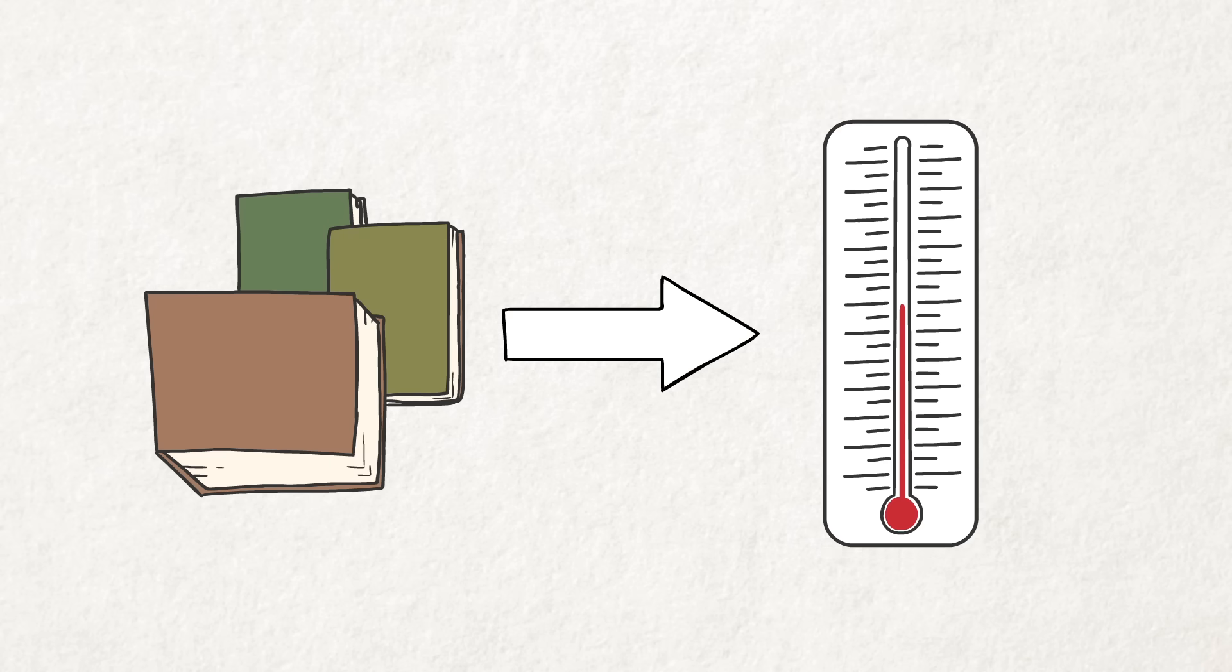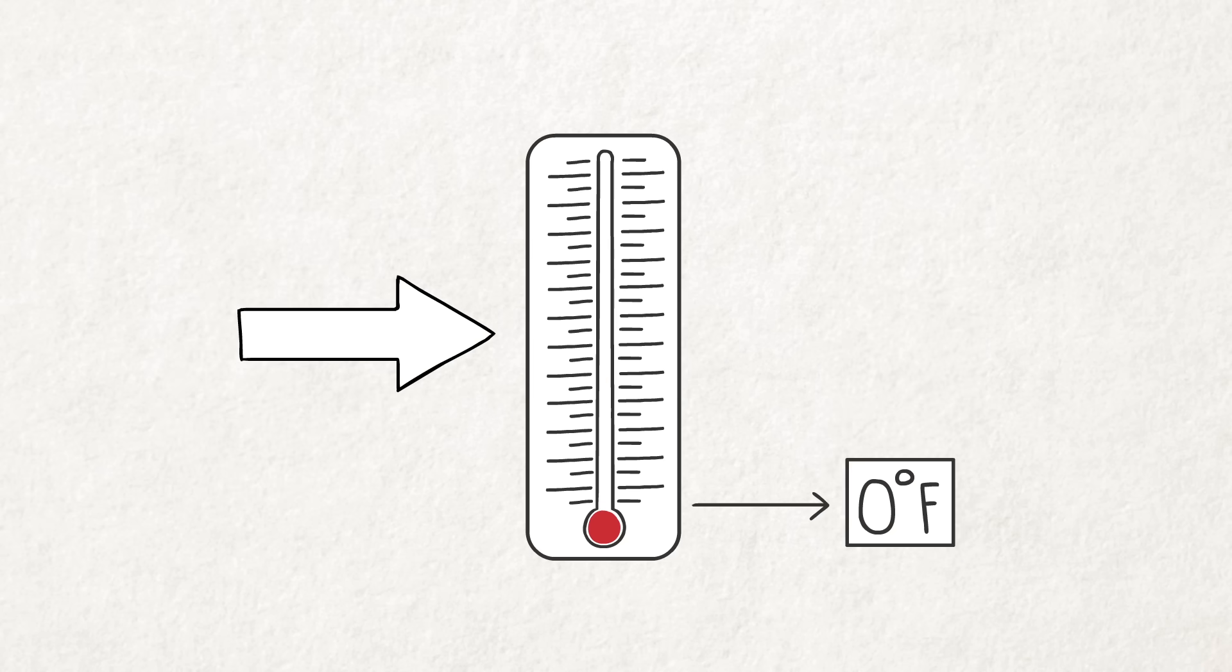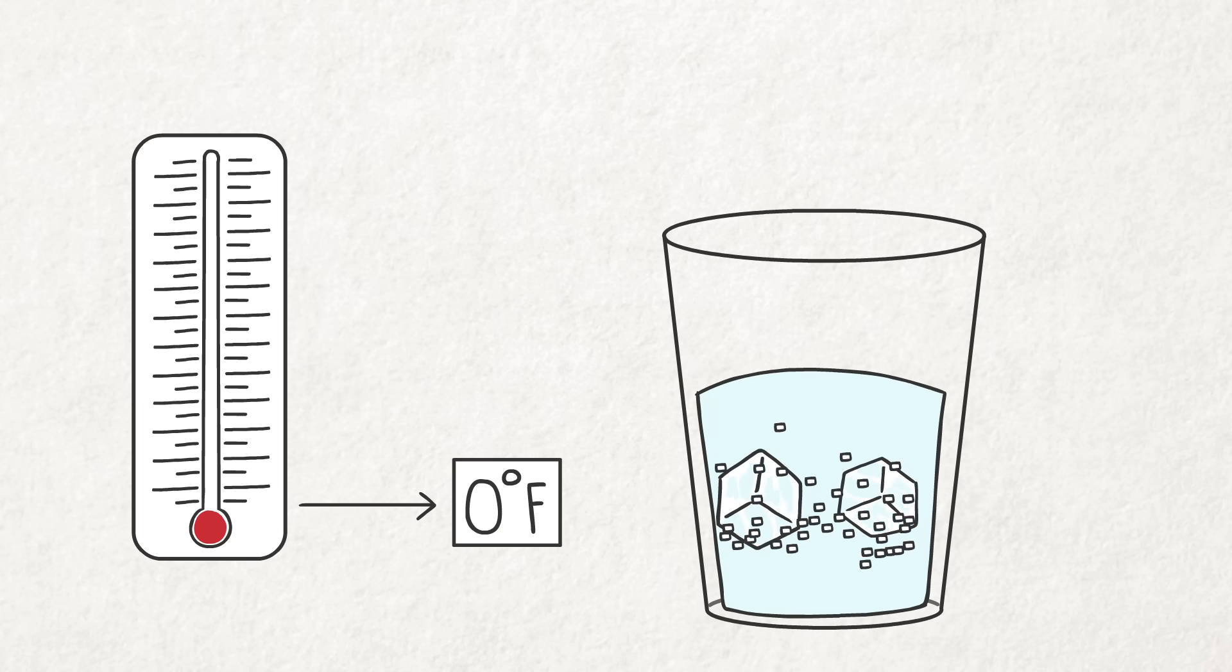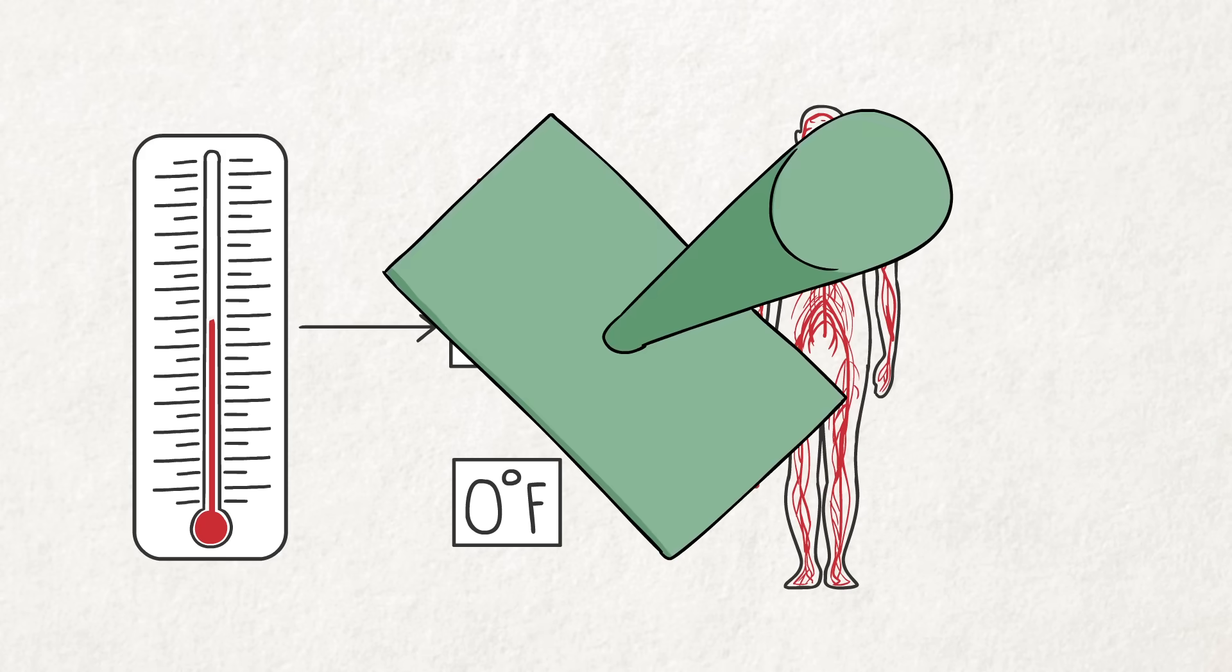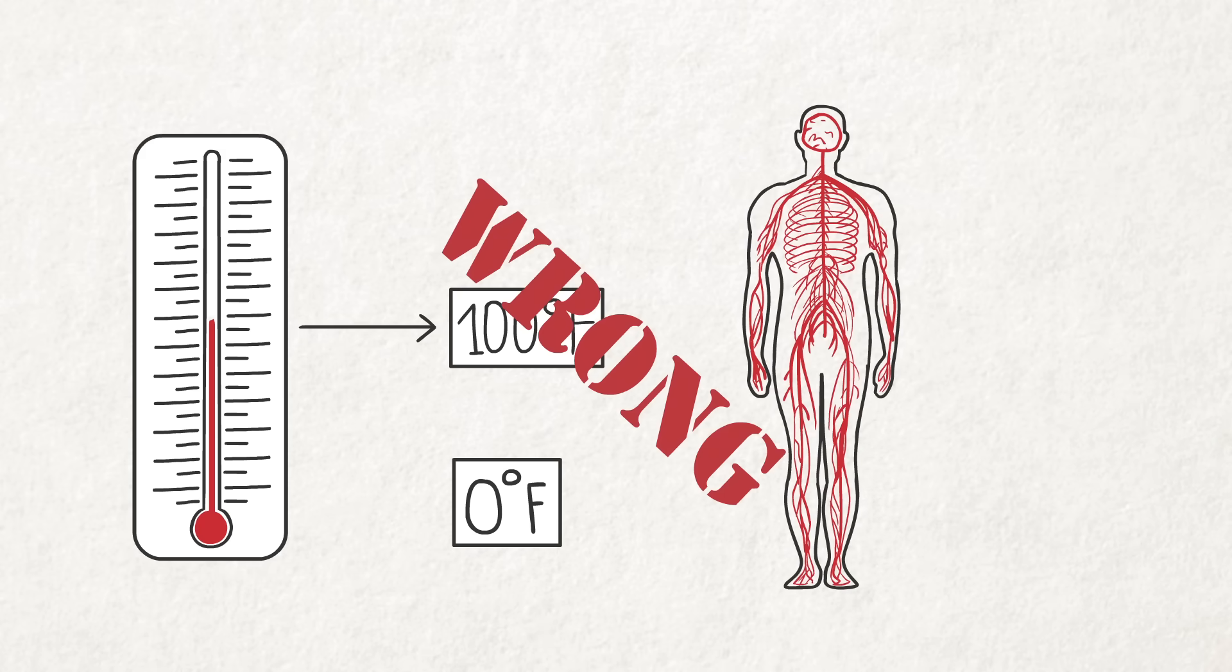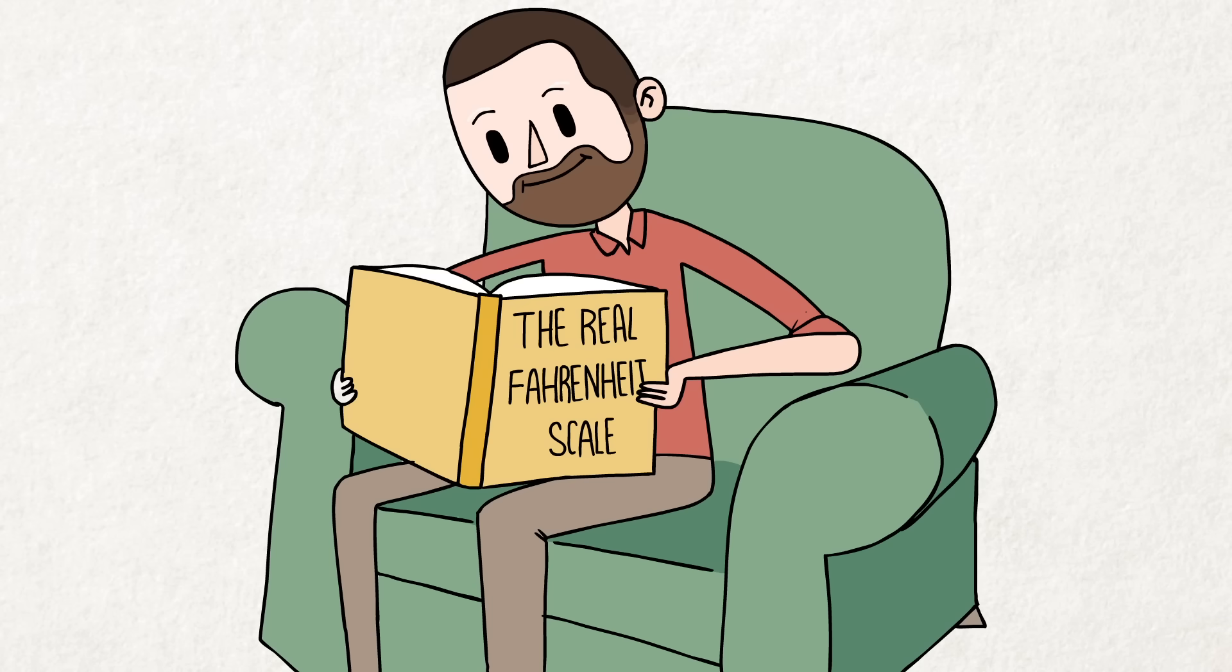According to many sources, the Fahrenheit scale was defined by setting zero degrees equal to the temperature of an ice, salt, and water mixture, and 100 degrees being roughly equal to human body temperature. But that isn't true. The real story is much more interesting and scientific.